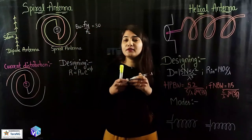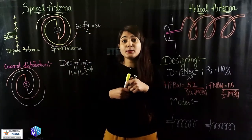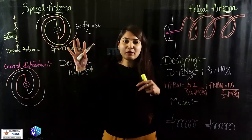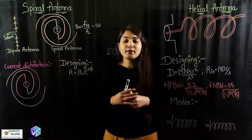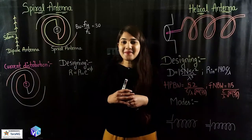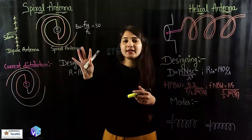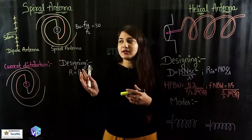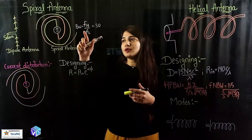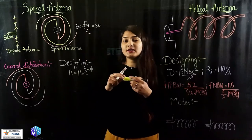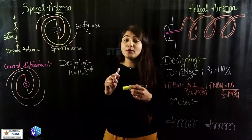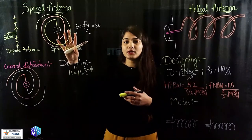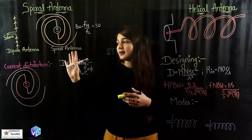Which means if I have the lower frequency at 1 GHz, my antenna can perfectly work at 30 GHz as well. This is amazing. So this is a very good advantage of the spiral antenna, and because of this it is highly used in military operations. It is also called the ultra-wideband antenna.